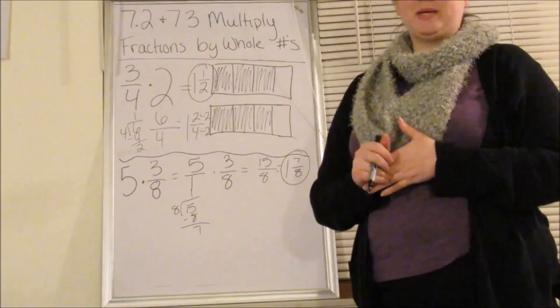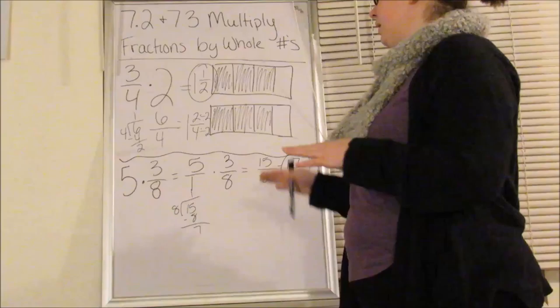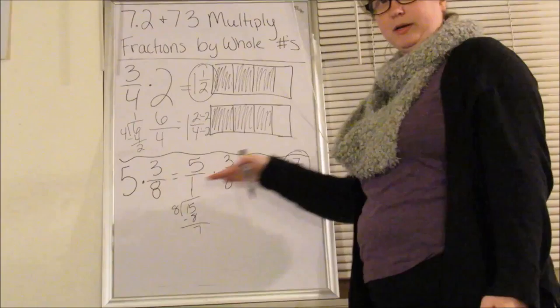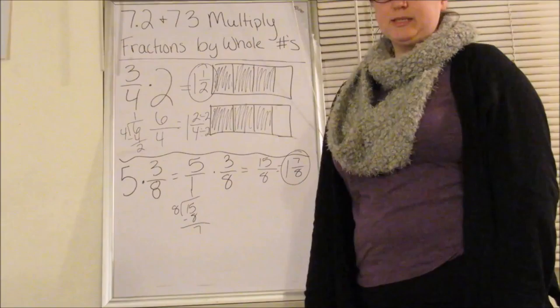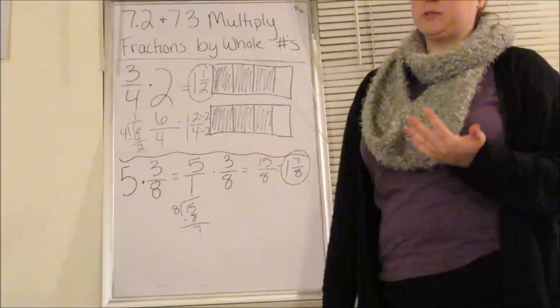Some people look at this as just multiplying the whole number times the numerator and putting it over the denominator. That's absolutely fine. The reason that I like putting it over one is because when we go to do fractions by fractions, it makes the transition a little bit easier. Just put your whole number over one and then multiply straight across. Multiply your numerators. Multiply your denominators.